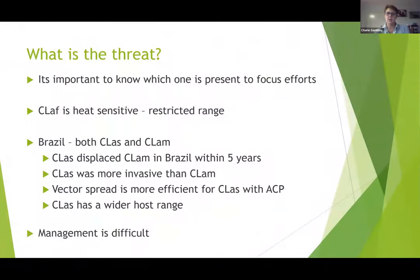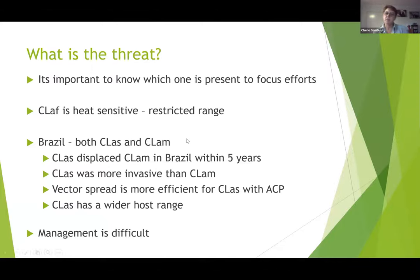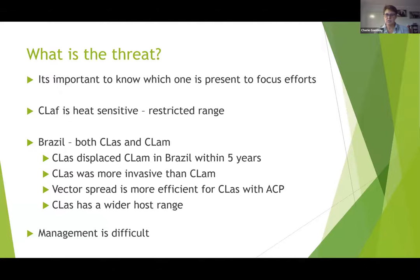So what is the threat? They all can be a threat, so you need to know which one you've got so you can focus your efforts. The Africanus species is heat sensitive, so it has a restricted range and loses symptoms when it gets warm. In Brazil, they had both the Asiaticus and Americanus Liberobacters, but within five years the Asiaticus displaced the Americanus — it's more invasive, the vector spreads it more efficiently, and it has that wider host range. So it's important to know which one you have.